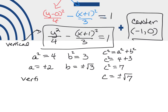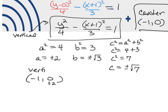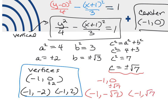The center of the hyperbola is at negative 1, 0. For the vertices, we add and subtract the a value to the y coordinate — since y came first. Adding and subtracting 2 gives vertices at negative 1, negative 2 and negative 1, positive 2. For the foci, using the c value, we add and subtract the square root of 7 to the y coordinate: foci are at negative 1, negative root 7 and negative 1, positive root 7.